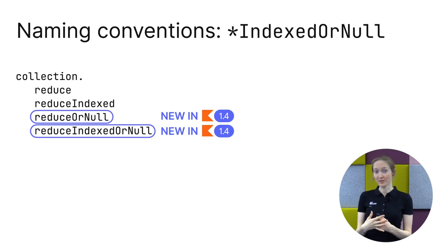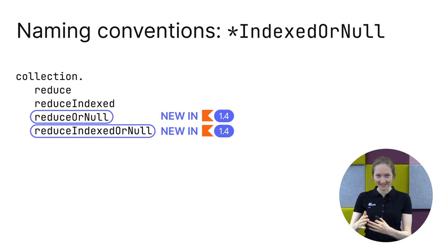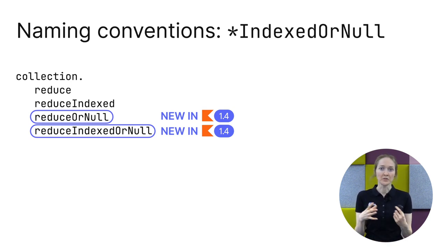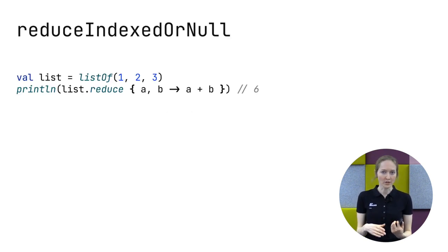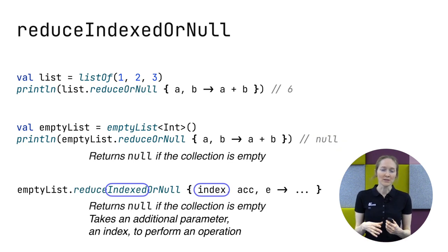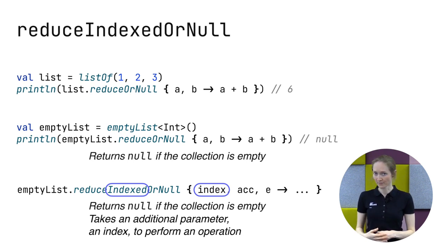The curious among you might be wondering whether the library can mix these two conventions — orNull and Indexed. The answer is yes. The new function reduceIndexedOrNull, added in Kotlin 1.4, is an illustration of that. Reduce analyzes the list and reduces its content to one element using the lambda operation. reduceOrNull returns null if the list is empty. reduceIndexedOrNull complies with both conventions: the lambda argument takes an additional index parameter, and the result is null if the collection is empty.